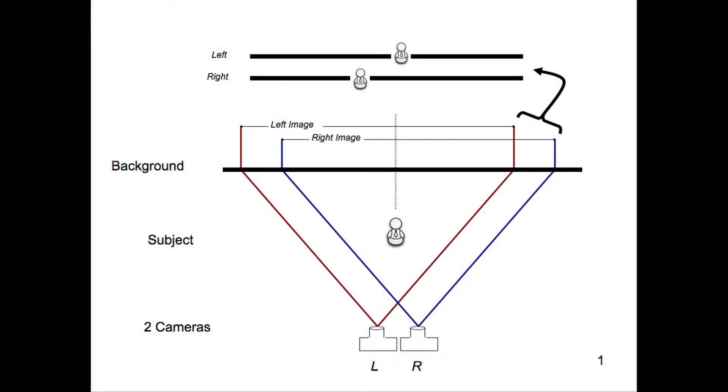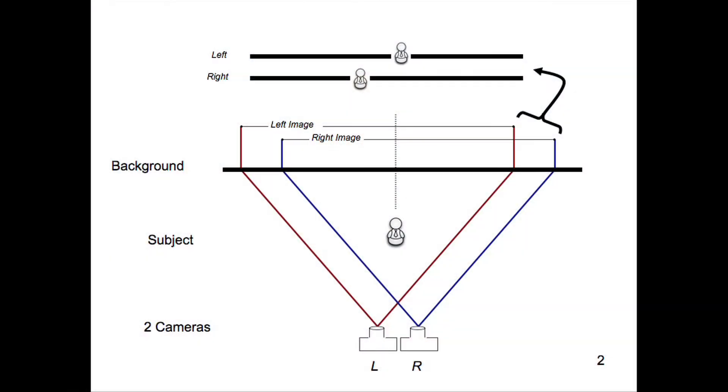Before talking about that script, let's talk about how all this 3D stuff works. It's based on a principle called stereoscopy. The idea is that you have two separate views that are slightly offset of the same image. Most of us are familiar with this because that's how our eyes work — you're looking at essentially 2D things, but your brain is reassembling that information into a 3D image based on the relative position of the subject against the background.